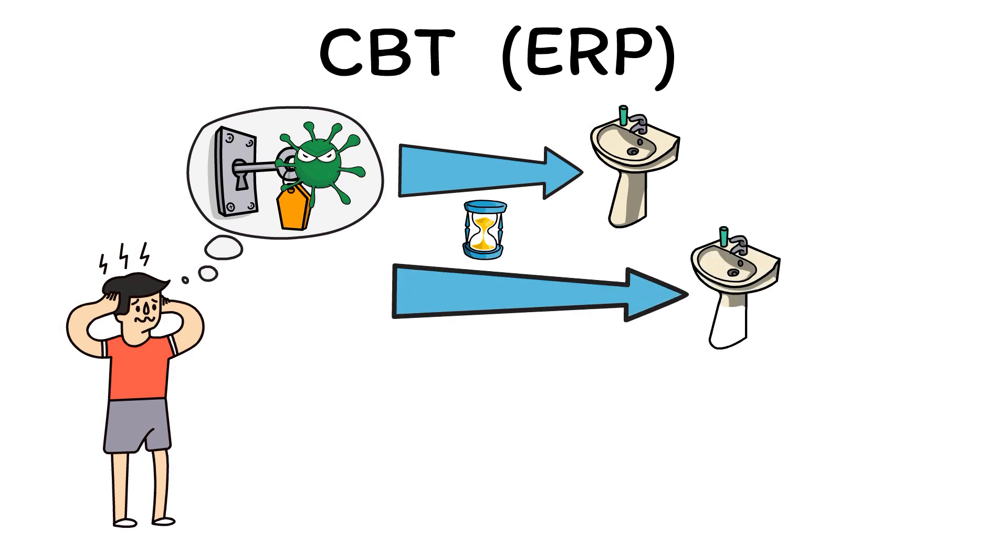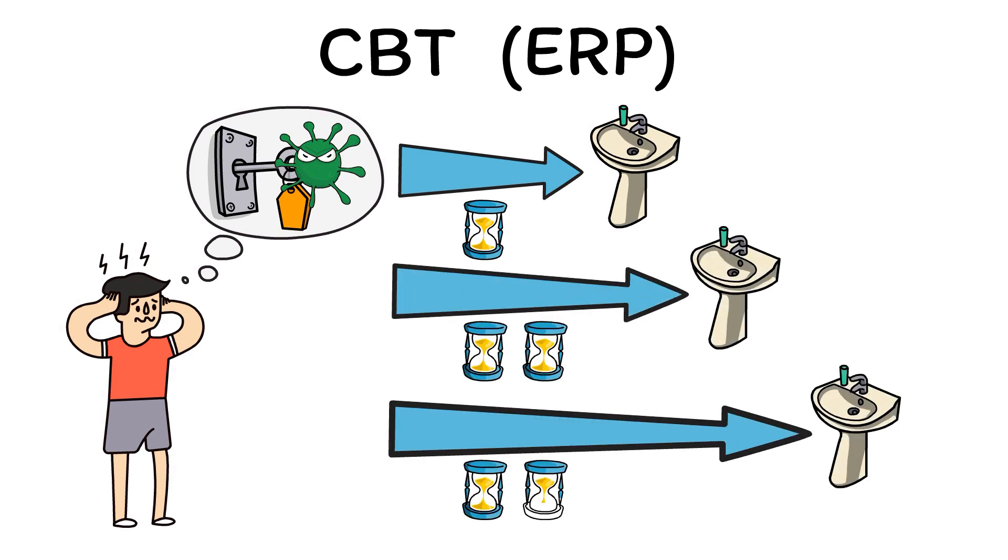The length of time between the obsession and compulsion is made longer and longer until the link between them is eventually broken. By doing this, people with OCD begin to learn that the obsession does not actually lead to the feared outcome and that compulsions are unnecessary for preventing harm.